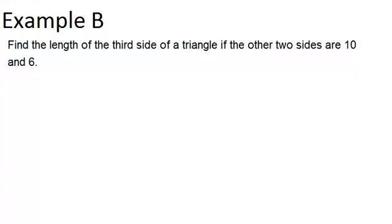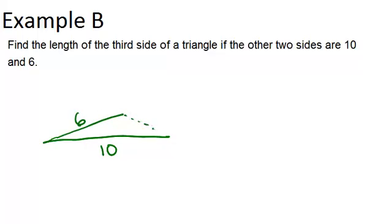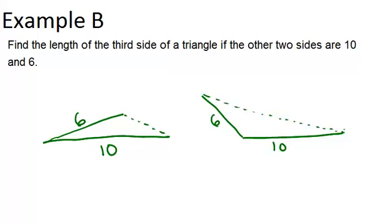In example B, it says: find the length of the third side of a triangle if the other two sides are 10 and 6. We know two sides of the triangle, so let's draw in possible triangles. 10 is one side and 6 is the other. It might look like a smaller triangle, or it could be a bigger obtuse-type triangle where there's an obtuse angle and the third side is the longest side. Thinking about these two possibilities will give us the two extremes for our inequality for the possible side lengths of the third side.